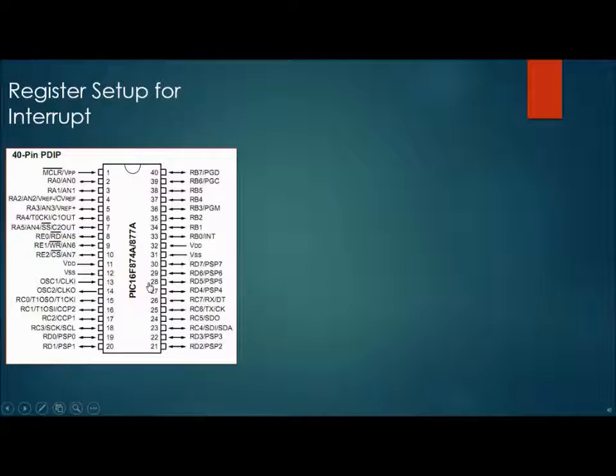We will go step by step to learn it. First let us see the pin arrangement of the microcontroller. This is the picture and here you can see that pin RB0 is having dual function of INT, which is nothing but an external interrupt. We will be using this pin to create the interrupt.